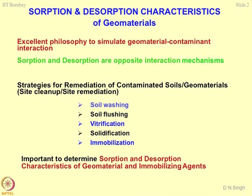Vitrification of the waste is another situation where you encounter these types of mechanisms. Solidification is the most commonly adopted approach in most projects — you solidify the waste and then bury it somewhere. The parameters which define the efficiency of a solidification strategy require quantification, and sorption and desorption serve as good controlling parameters to decide upon the efficiency of the solidification activity.